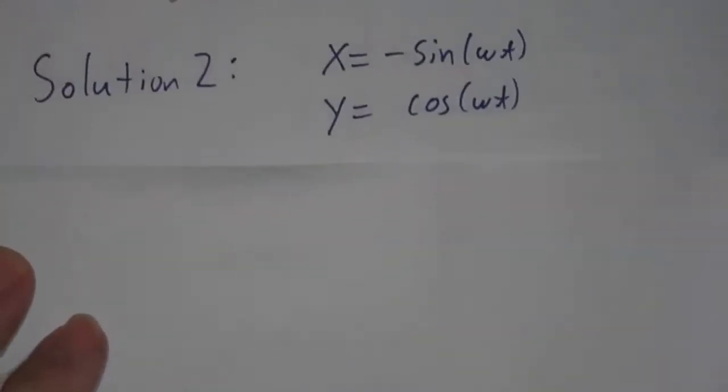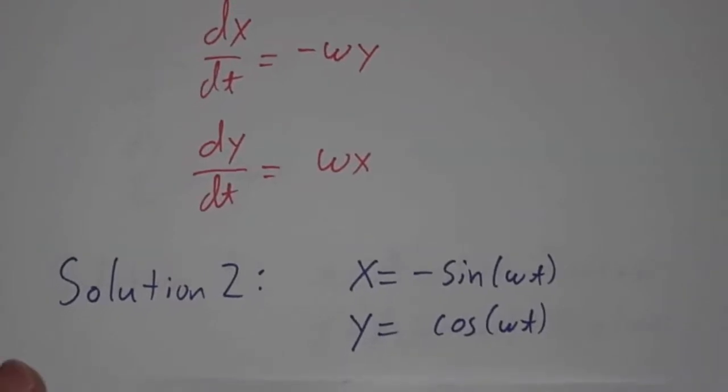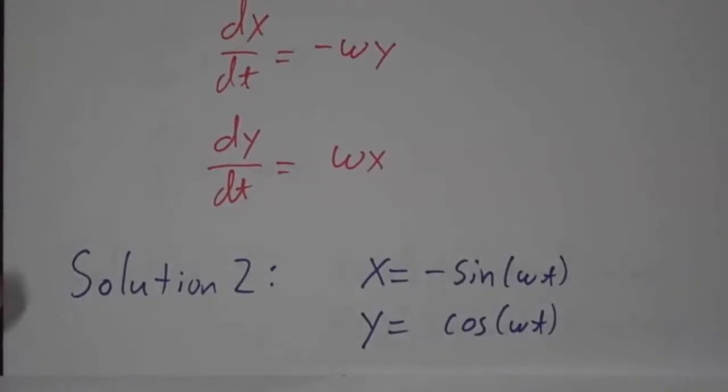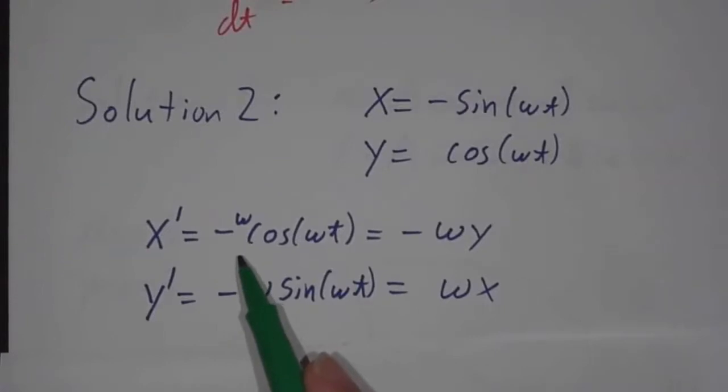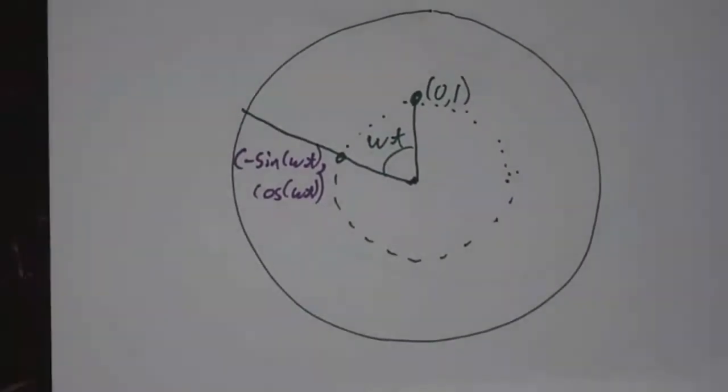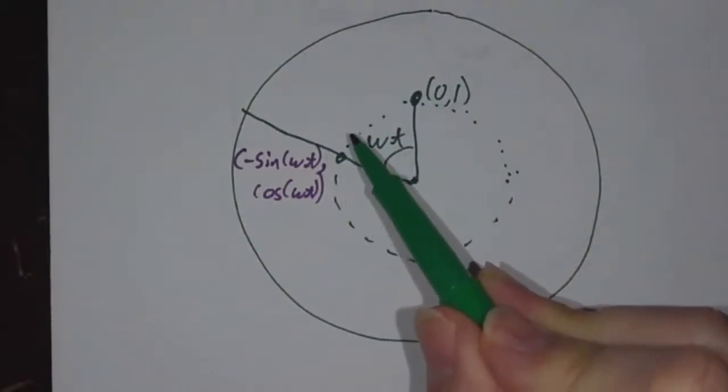Okay. Here's another solution. Same equations. But now, our solution is that x is minus sine of omega t, and y is cosine. Again, we can just compute our derivatives. The derivative of minus sine is minus omega cosine. That's minus omega y. The derivative of cosine is minus sine. That's omega x. And that is what you get if you start at the top of the wheel and rotate by an angle omega t.